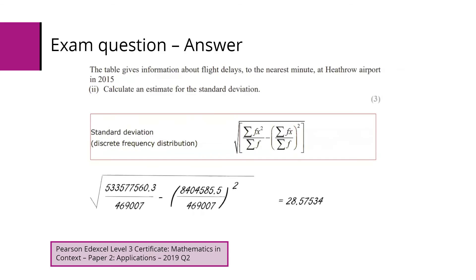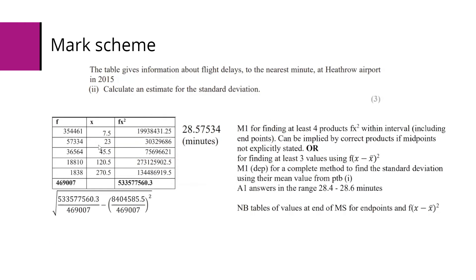Mark scheme for this one: another method mark, this time for multiplying the frequency by a value squared. You're supposed to be using the midpoints again, but they can use other ones to get the method mark. A second method mark for a complete method, they're allowed to follow through and use their previous answer to part b rather than finding the mean again, and an accuracy mark for answers in the range 28.4 to 28.6.